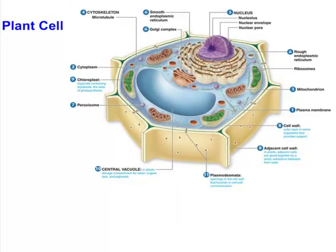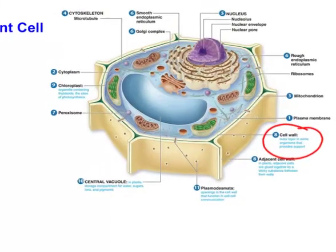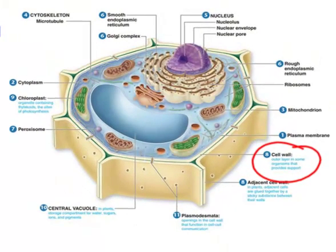First off we're going to have a look at a plant cell. One of the really distinguishing features of a plant cell is that around plant cells they have a rather thick cell wall made of cellulose. Animal cells don't have this but plants do. This is what makes plants crunchy when you chew on them. They do have a membrane inside but it's plastered up against the cell wall and it'd be very hard to see under a microscope.